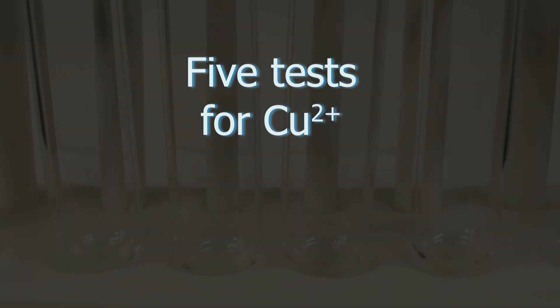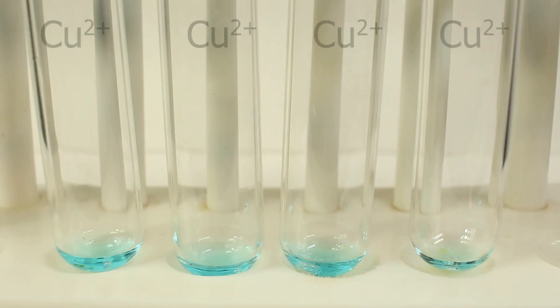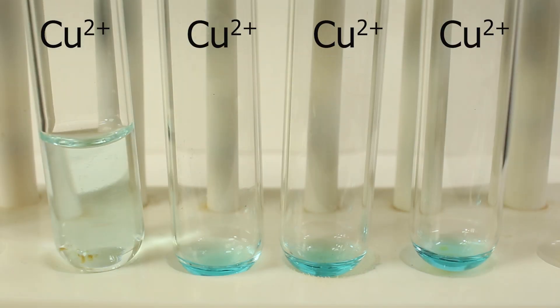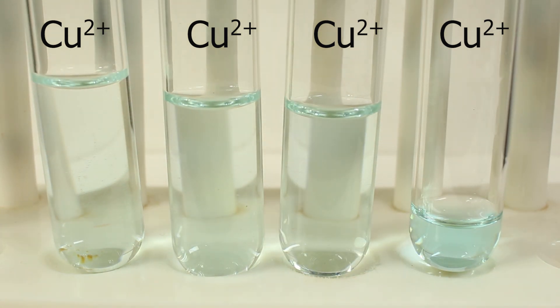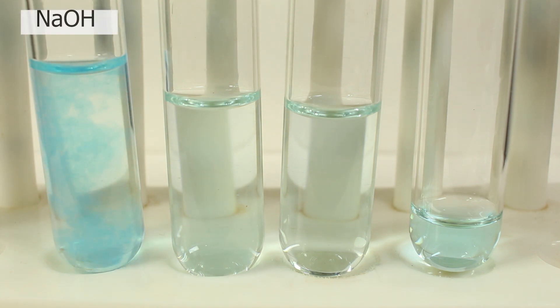Let's run all five tests for copper in first sequence. We need a bit higher concentration for potassium iodide test, so I don't add so much water otherwise the reaction doesn't run. Sodium hydroxide, blue precipitate of copper II hydroxide.